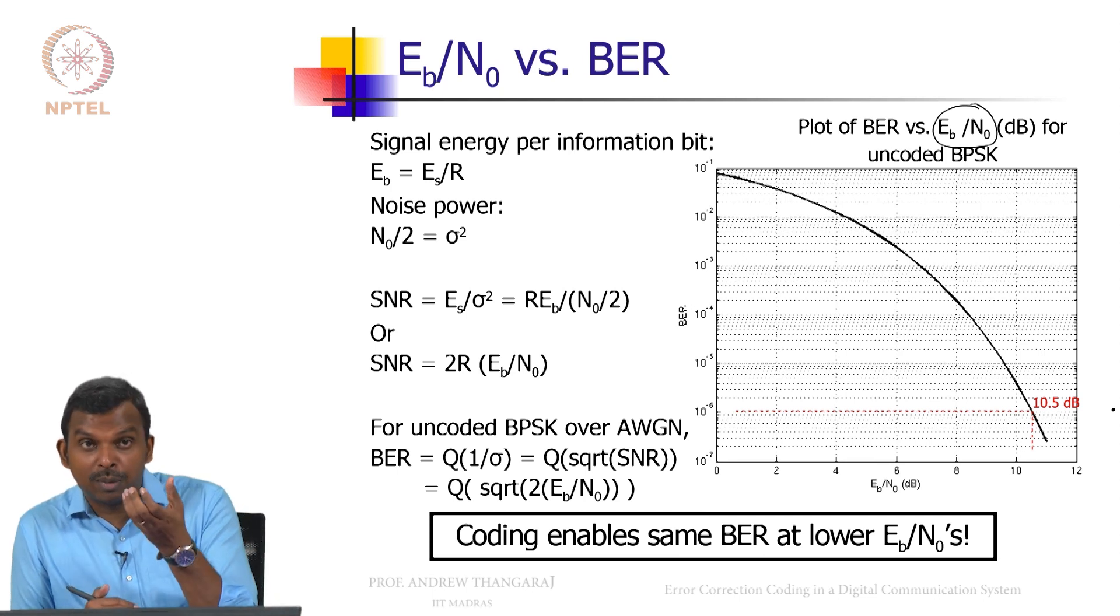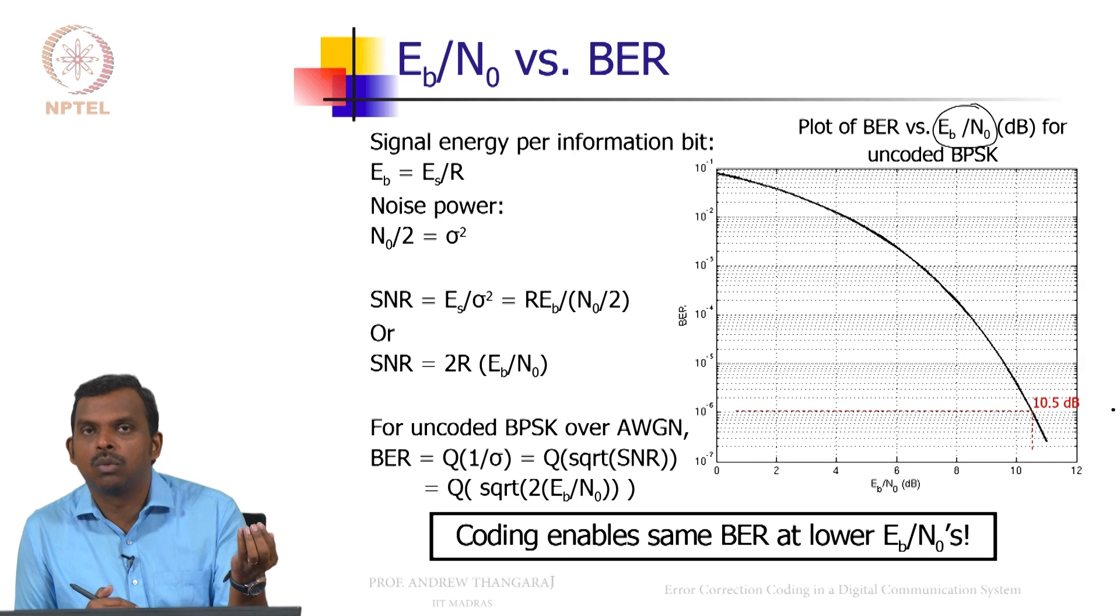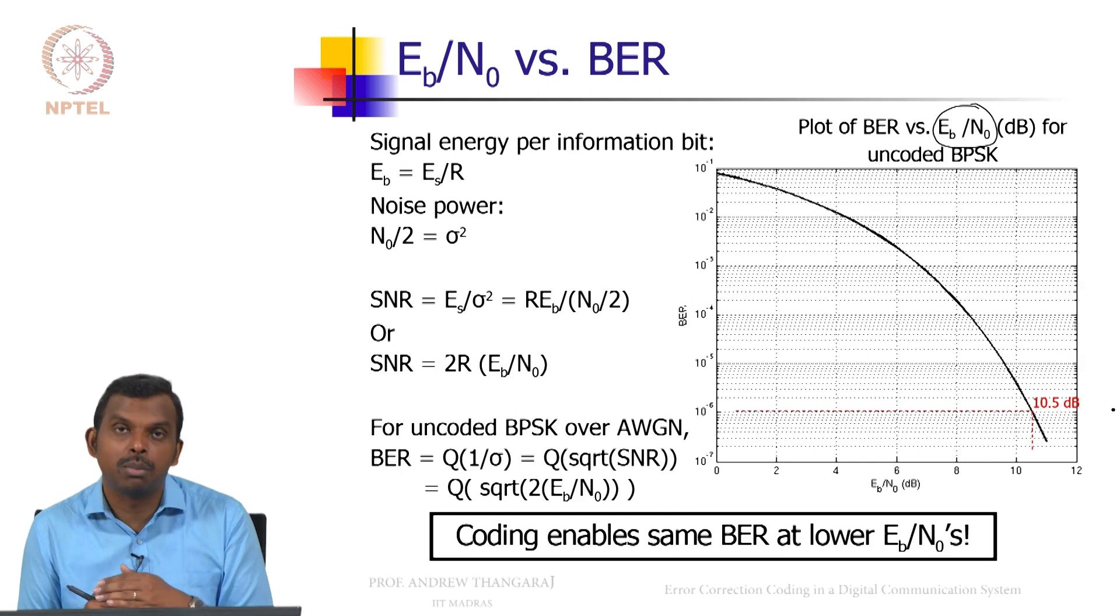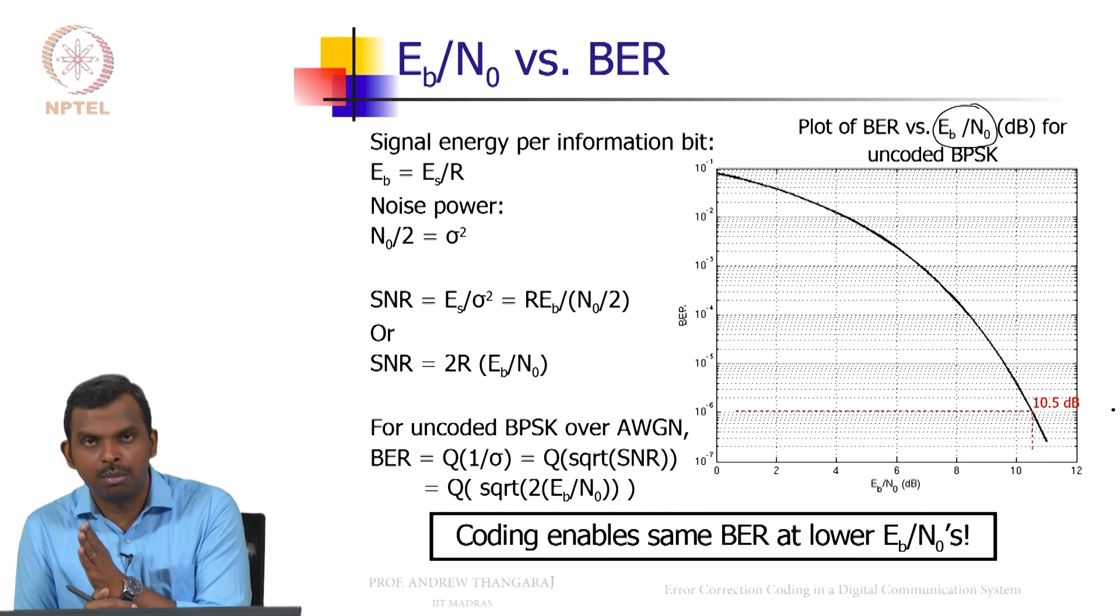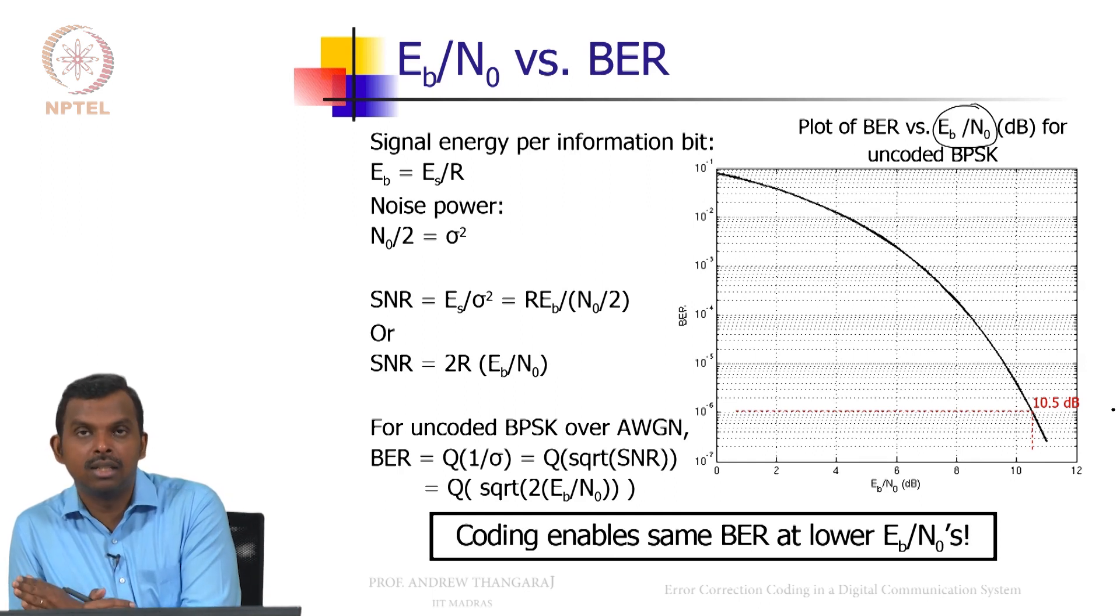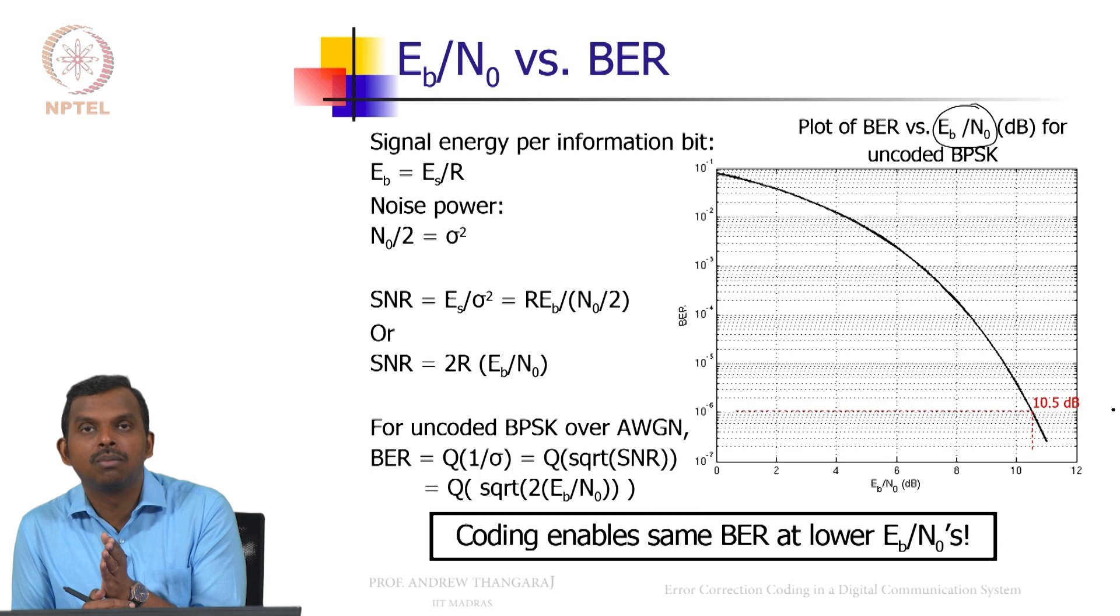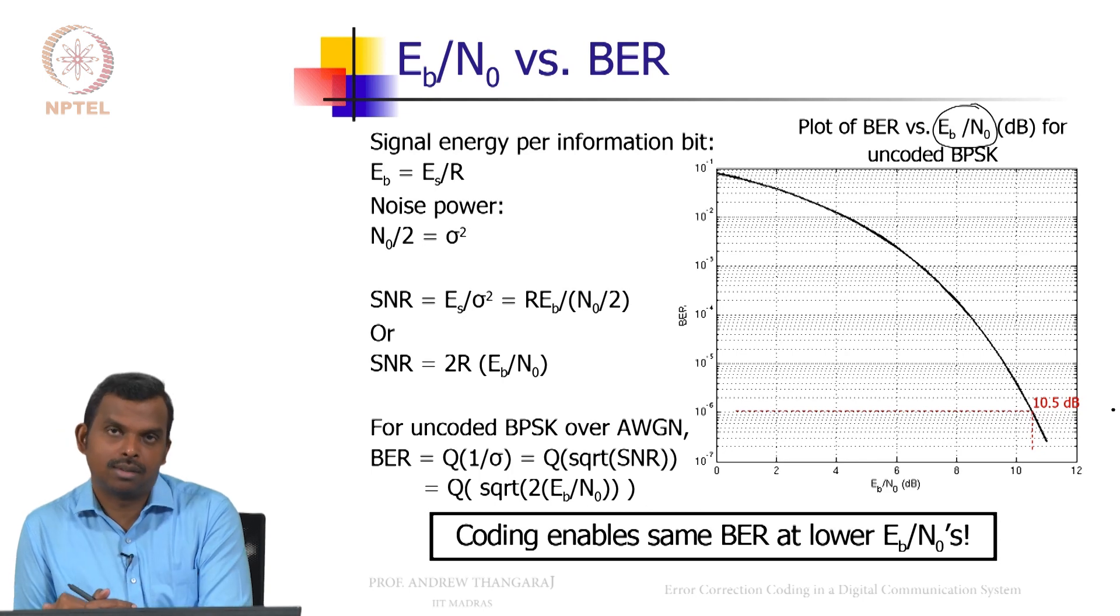Because if you spend so much energy in the uncoded case for a symbol, you are transmitting one bit. But if you spend the same amount of energy in a coded case, you are not sending one bit. You are sending less than one bit. If you want to send k bits, you have to send N symbols. So you have to spend N times the symbol energy and you will be sending only k bits.